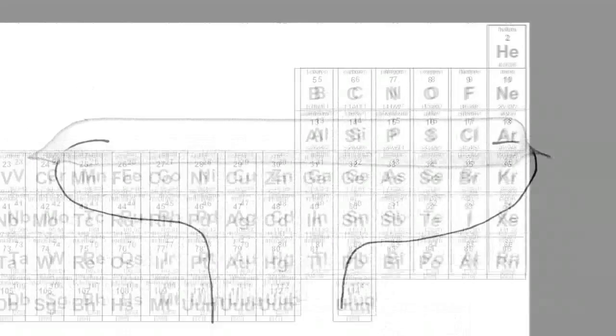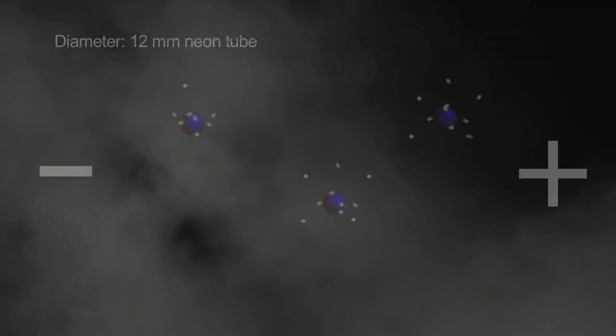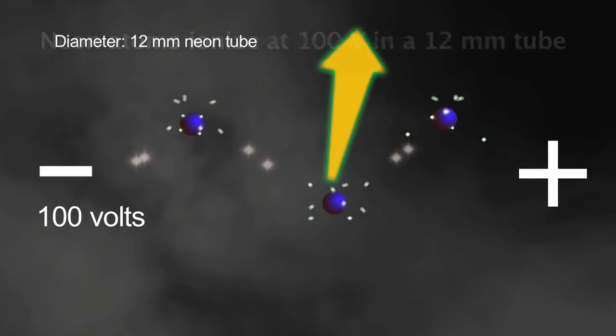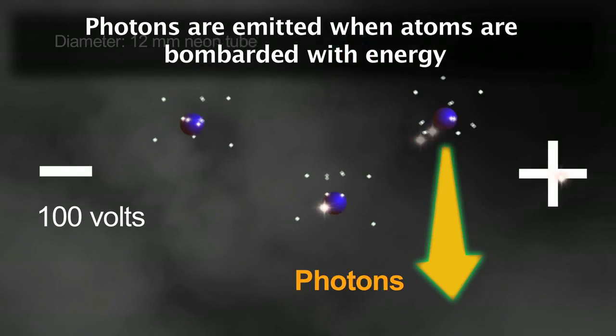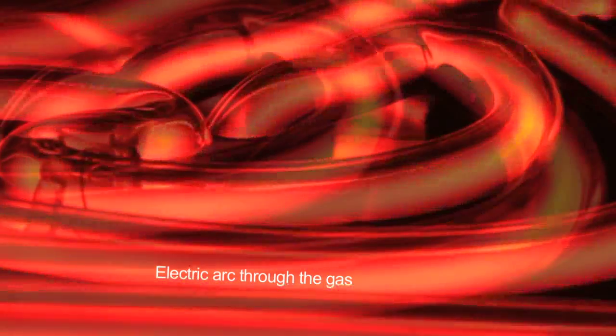If they're filled with neon gas, generally the tubing is clear glass, and when you light up the neon gas inside, it lights up a brilliant red-orange color.